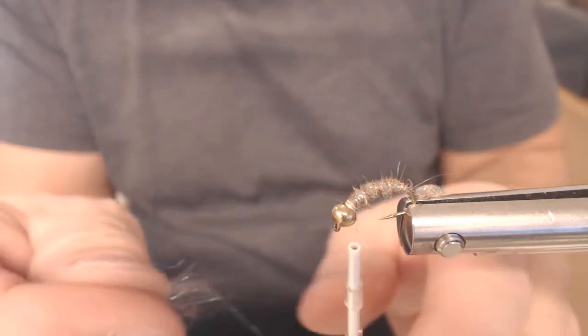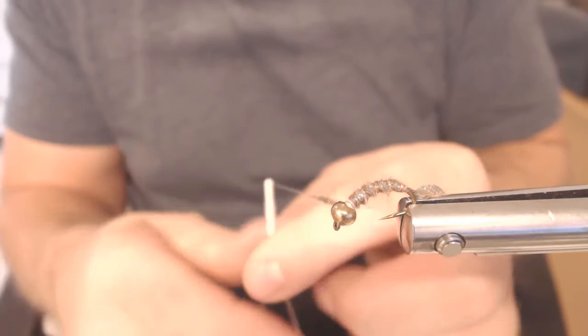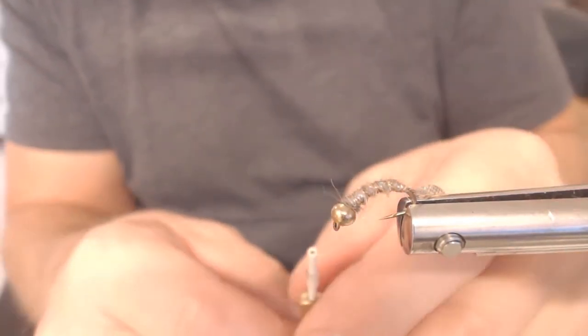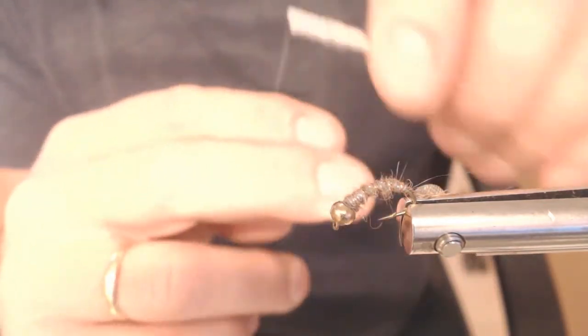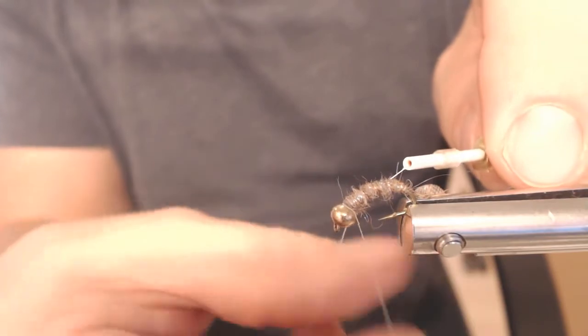Og så for å dekke den siste varpen med bindetråd, så tar jeg egentlig bare å dubbe litt mer. Så får du en slags krave oppe ved hodet her. Og bruker da to finger Vip Finish. (And to cover the last wrap with binding thread, I just dub a bit more. Then you get a kind of collar up by the head here. And use the two finger Vip Finish.)